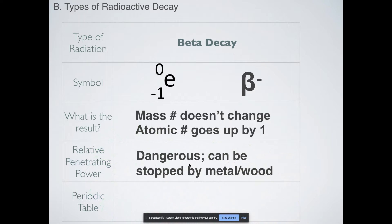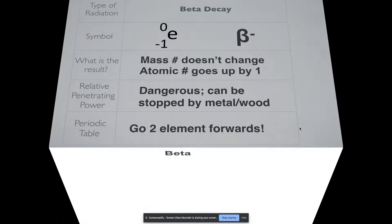How powerful? Beta decay is pretty dangerous, but it can be stopped by pieces of metal or wood. So if you're inside a house and you're not in your windows, beta decay is not going to be very harmful to you at all. And again, it says two elements forward but you only go one element forward. So I need to correct that. When you're doing beta decay, you're moving up by one because the atomic number is moving up by one.